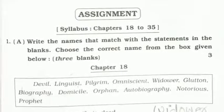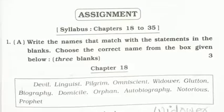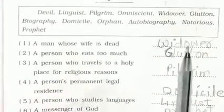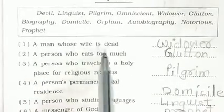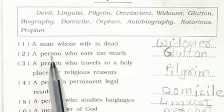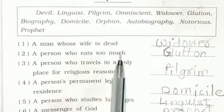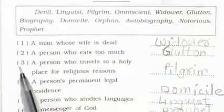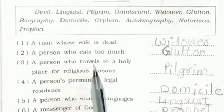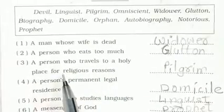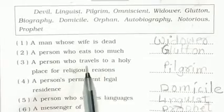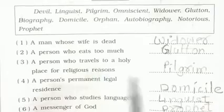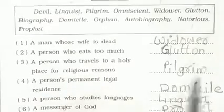Number 1: A man whose wife is dead — Widower. Number 2: A person who eats too much — Glutton. Number 3: A person who travels to a holy place for religious reasons — Pilgrim.